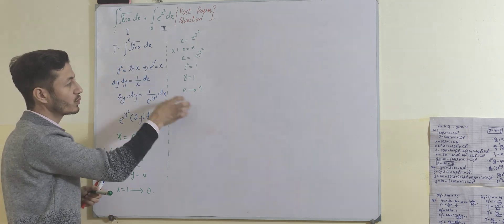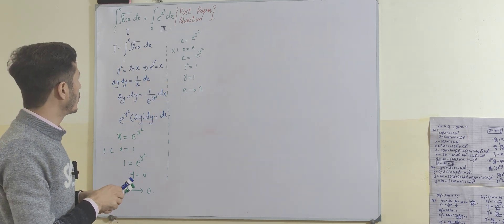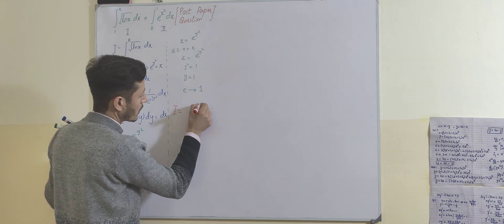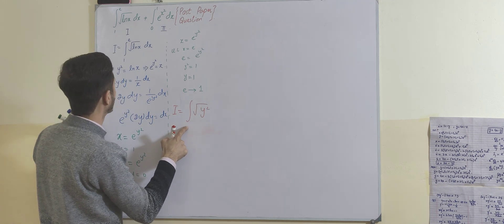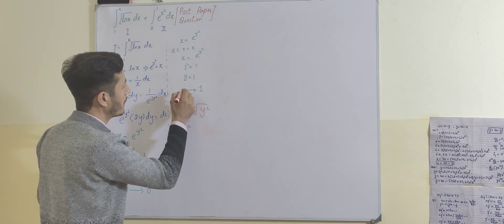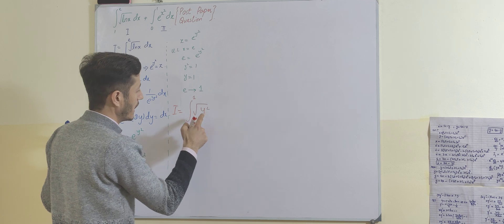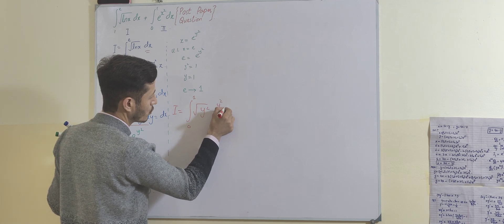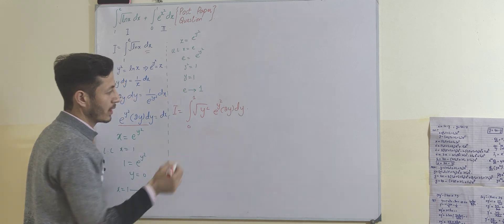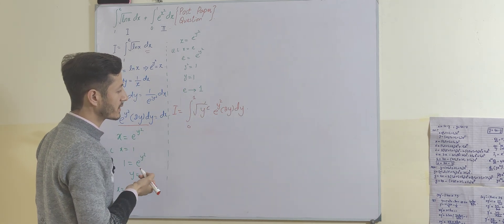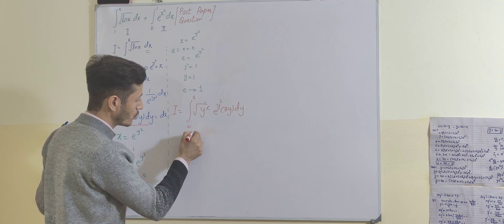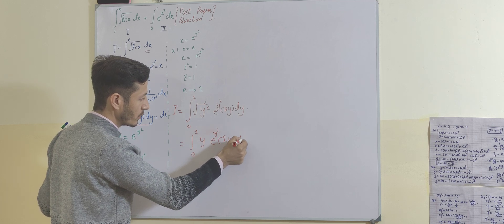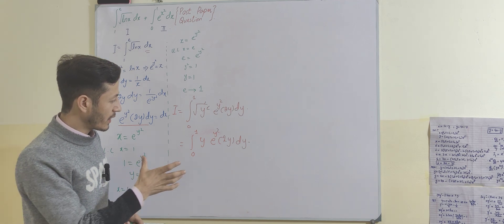Now we substitute and replace the limits. The integral becomes I = integral from 0 to 1 of √(y²) · e^(y²) · 2y dy. The square root and the square cancel each other, giving I = integral from 0 to 1 of y · e^(y²) · 2y dy.